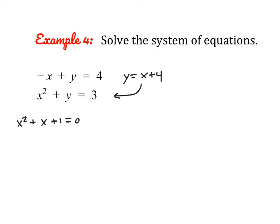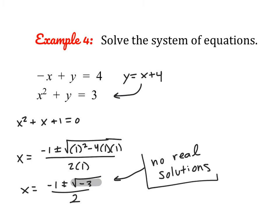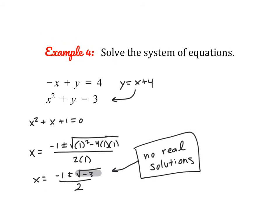Applying the quadratic formula, we get the square root of negative 3, which tells us both solutions are imaginary. In this case, we have no real solutions, meaning there are no points of intersection, and we're done. If you come across any imaginary solutions, you can state no real solutions — but you do need to show all the correct work up to that point to prove it.